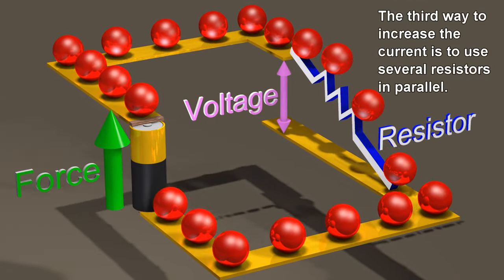The third way to increase the current is to use several resistors in parallel.